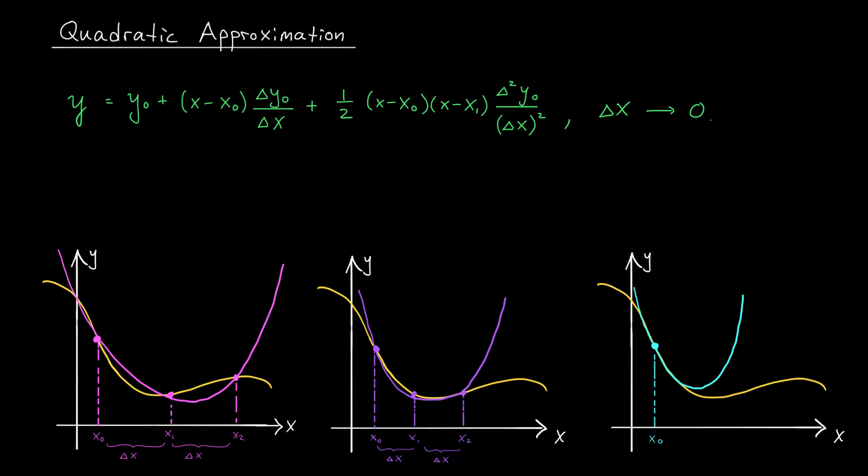Notice that the quadratic curve very closely resembles the behavior of my function near this point. Now, you gotta admit, that is kind of cool. But how do we actually find the equation of this resulting parabola? Well, just like in the linear case, we start with the equation of our approximating functions, and we see what happens as we let this Δx term go to zero. In this case, a few things are going to happen.